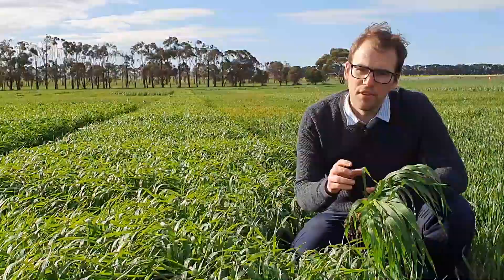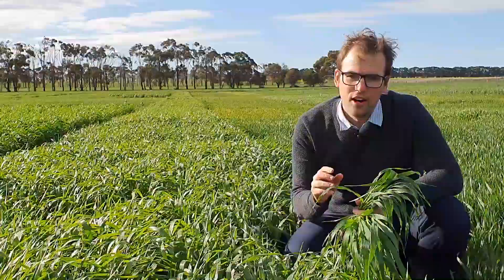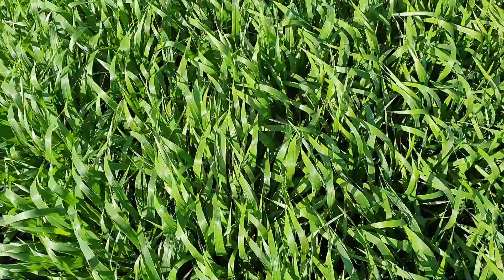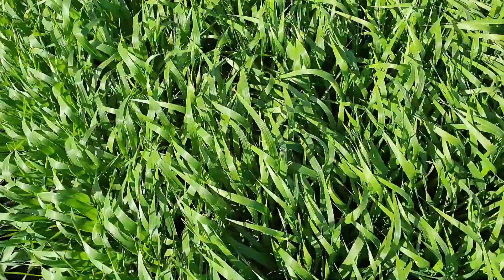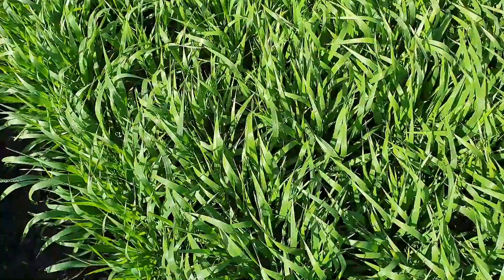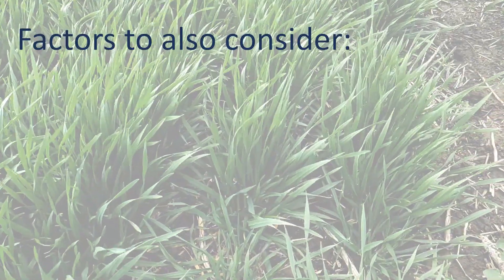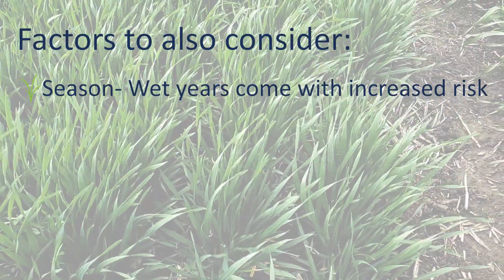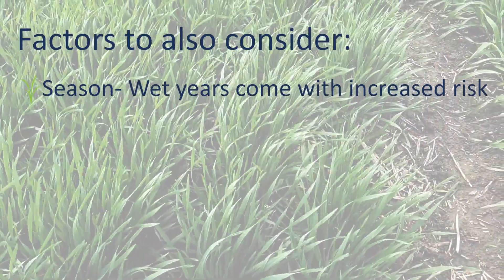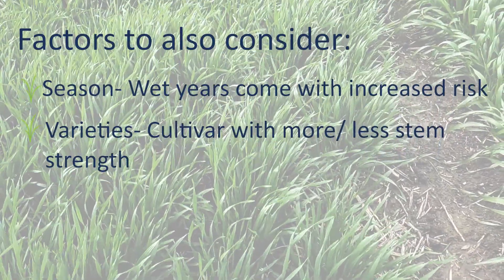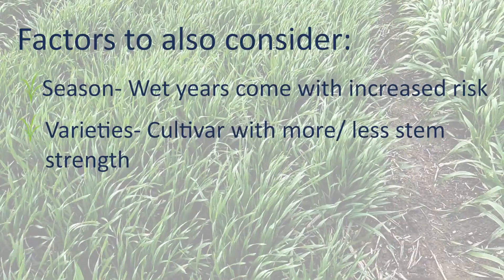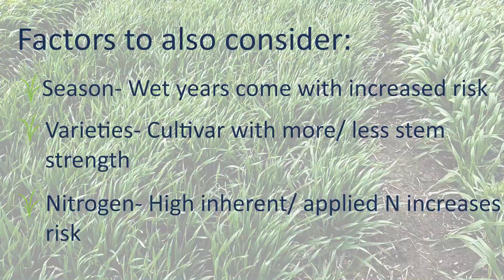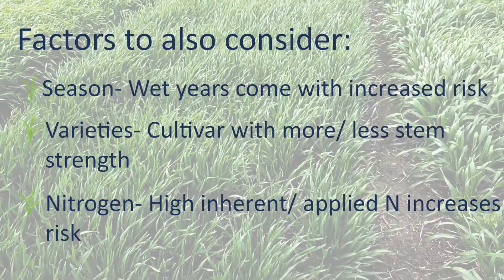As a tip for when to apply a PGR, I like to look at the canopy around growth stage 30. As a rule of thumb, if you can actually see the ground at growth stage 30, you're less likely to be lodging. Other important risk factors are yield potential - in wet years when we're on target for more than four to five tonnes per hectare, barley's at a bigger risk. Also, variety choice and inherent nitrogen determine what the crop canopy looks like at growth stage 30.